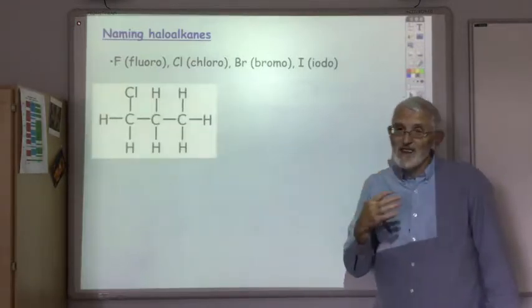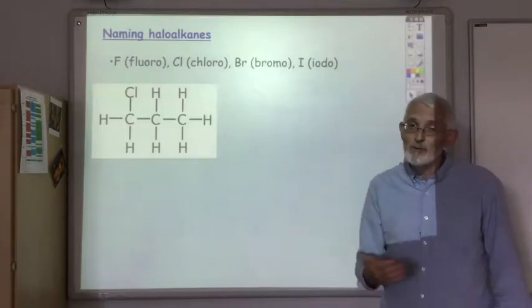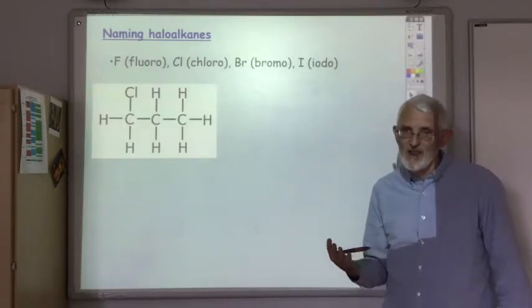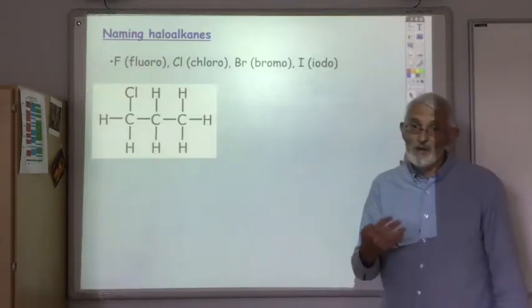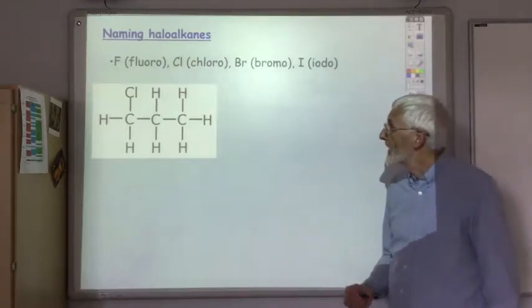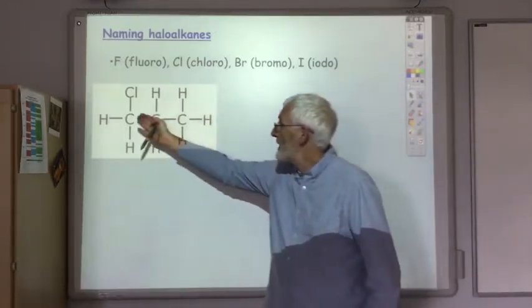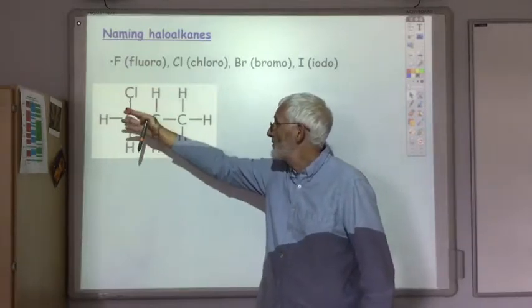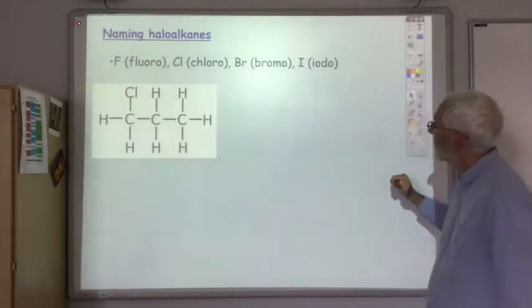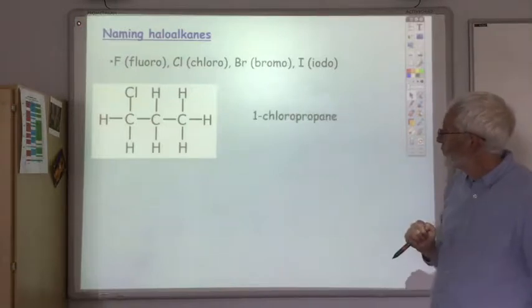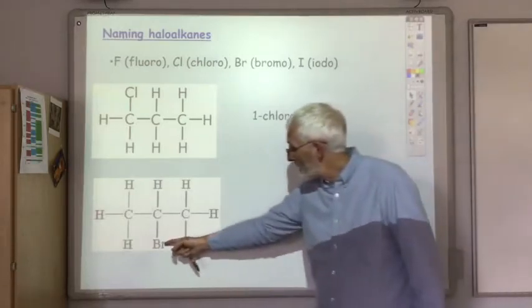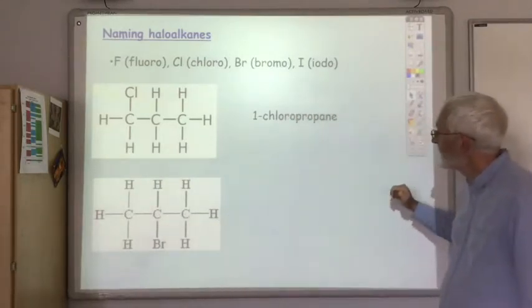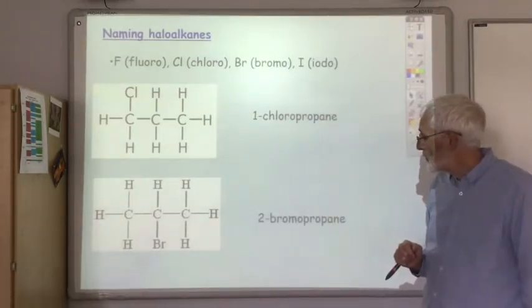The basic naming system follows all the basic rules you learnt in National 5 and Higher for naming branched alkanes — in this case the branch is the halogen. Here we see propane with a chlorine branch on the first carbon, so that would be 1-chloropropane. This one has a bromine on the second carbon, so that would be 2-bromopropane.